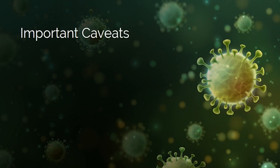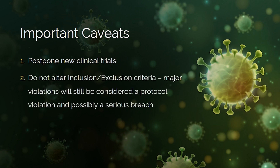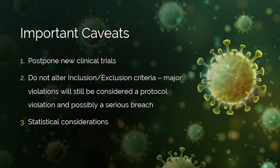We recommend postponing the first patient first visit of any study likely to begin within the next month, except those related to coronavirus vaccines and assessment kits. We also recommend not allowing investigators to alter the protocol's inclusion-exclusion criteria, as any major violations would still be considered a protocol violation, and if they have a safety impact, could be considered a serious breach. There are also statistical considerations — you should already be in discussion with your study statistician to discuss ways to minimize the impact of study visit delays and missing data. One such possible impact would be to require additional study subjects to be randomized if the number of missing data points is significant, but your statistician will have to calculate this.